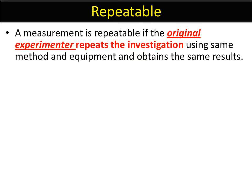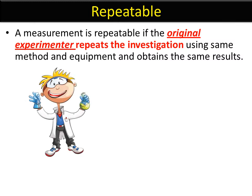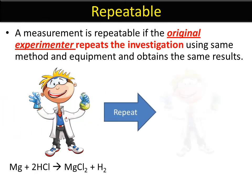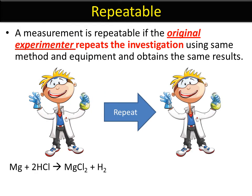A repeatable result is one where the original person who did the experiment can repeat it using exactly the same methods as before and get the same result. So it's like you doing an experiment in class — if it's a repeatable result, you can do the same thing again and get exactly the same result. That's the original experimenter doing it again and getting the same result.